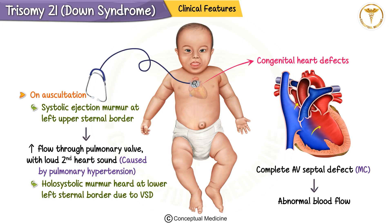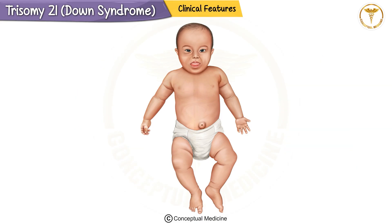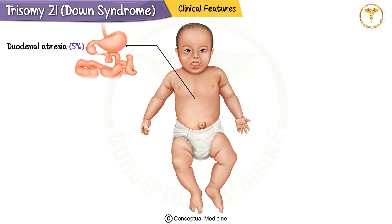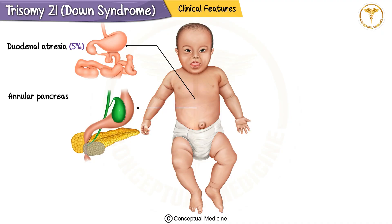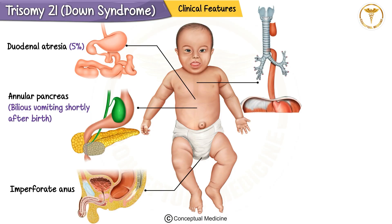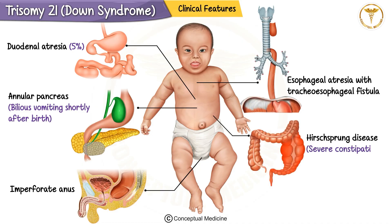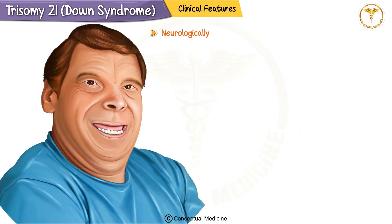Additionally, a holosystolic murmur can be heard at the lower left sternal border due to a ventricular septal defect. Around 5% of patients have gastrointestinal conditions like duodenal atresia, where the first part of the small intestine is blocked, often associated with an annular pancreas. These infants may present with bilious vomiting shortly after birth. Other conditions include imperforate anus, esophageal atresia with a tracheoesophageal fistula.